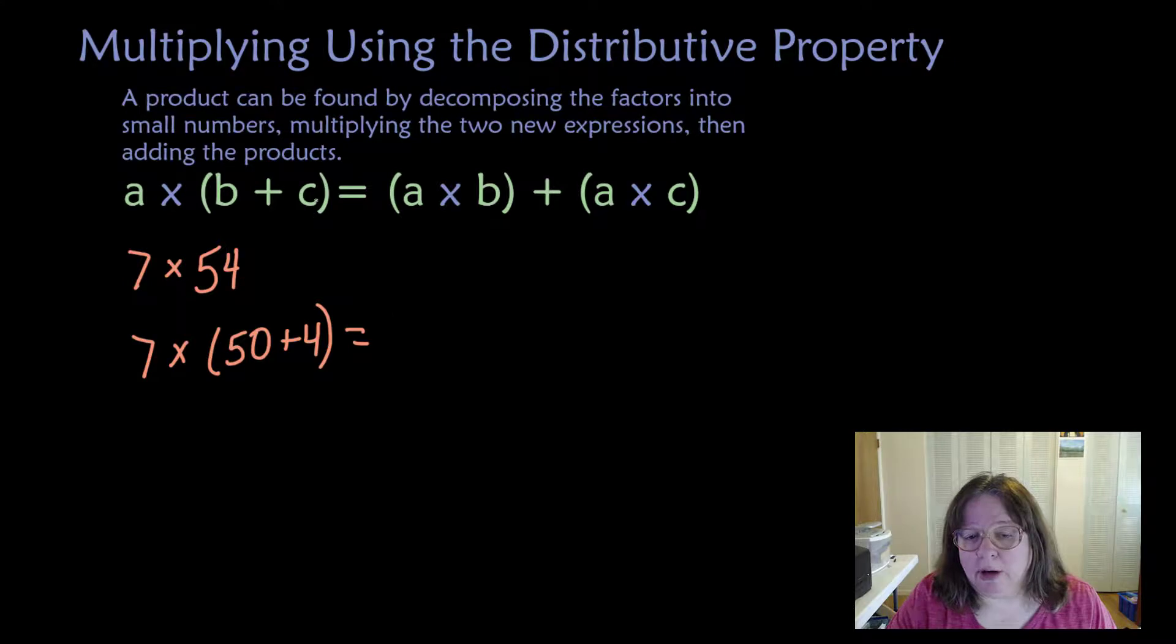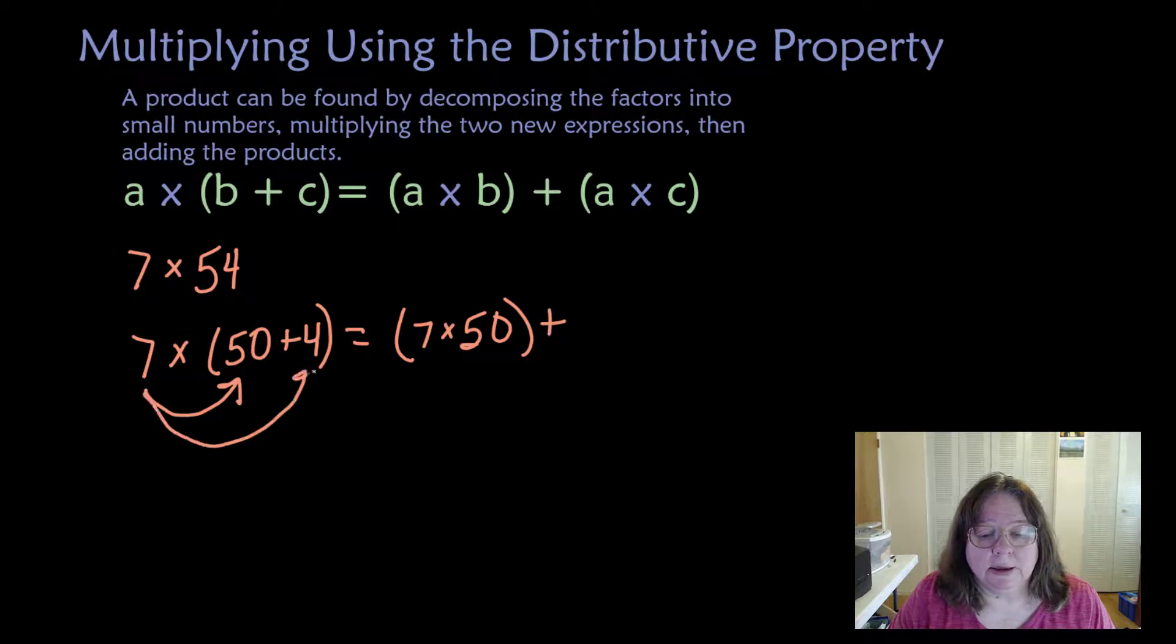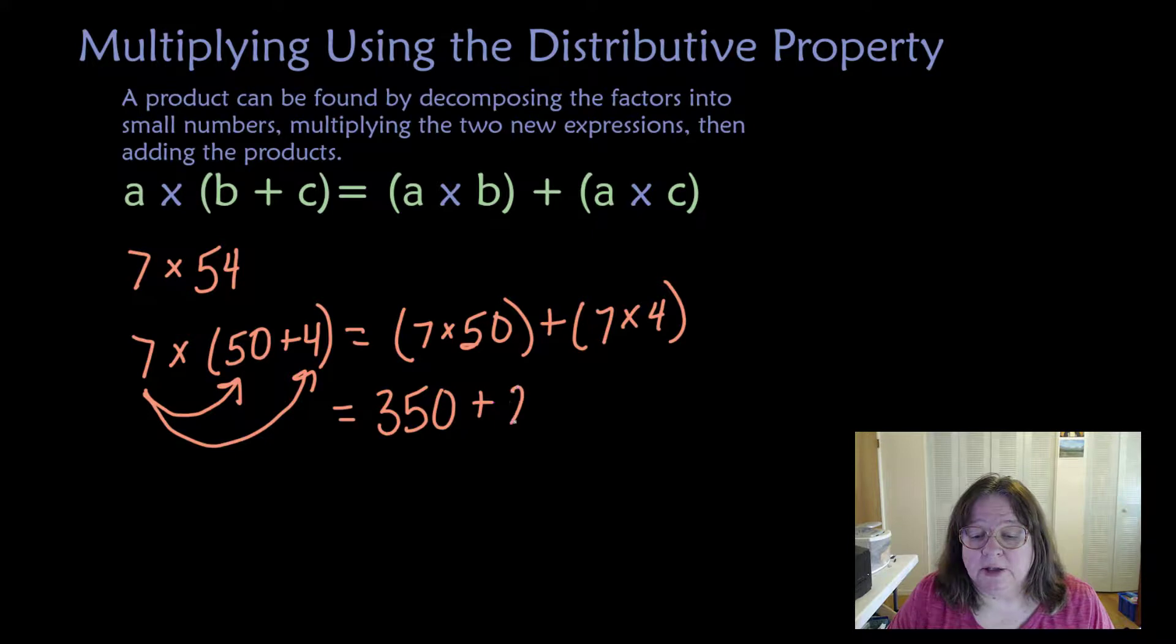So the A will be 7, and let's just break this up into 50 plus 4. When I do this, I'm paralleling the work up here so that hopefully the more we do it, the more familiar it will become. So now we're going to distribute the 7 times 50 plus 7 times 4. 7 times 5 is 35, so 7 times 50 is 350, 7 times 4 is 28, and so our answer is 378.